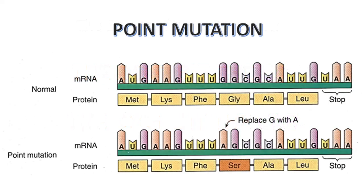This diagram shows what can happen with a point mutation. In this point mutation, the base guanine was changed to adenine. This change in the codon caused the insertion of serine rather than glycine into the growing amino acid chain. Sometimes the errors caused by point mutations don't interfere with protein function, but often the effect is disastrous.